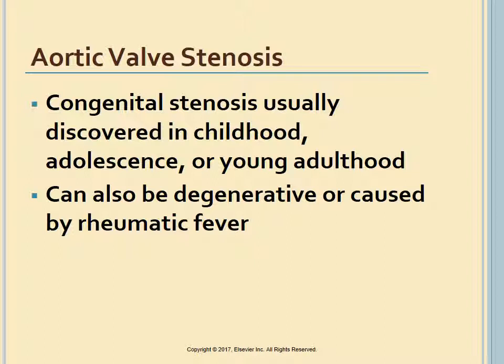Congenital aortic stenosis is generally found in childhood, adolescence, or young adulthood. In older adults, aortic stenosis results from rheumatic fever or degeneration. Aortic stenosis due to rheumatic heart disease often accompanies mitral valve disease. The incidence of rheumatic aortic valve disease has been decreasing, but degenerative stenosis is increasing as the population ages.